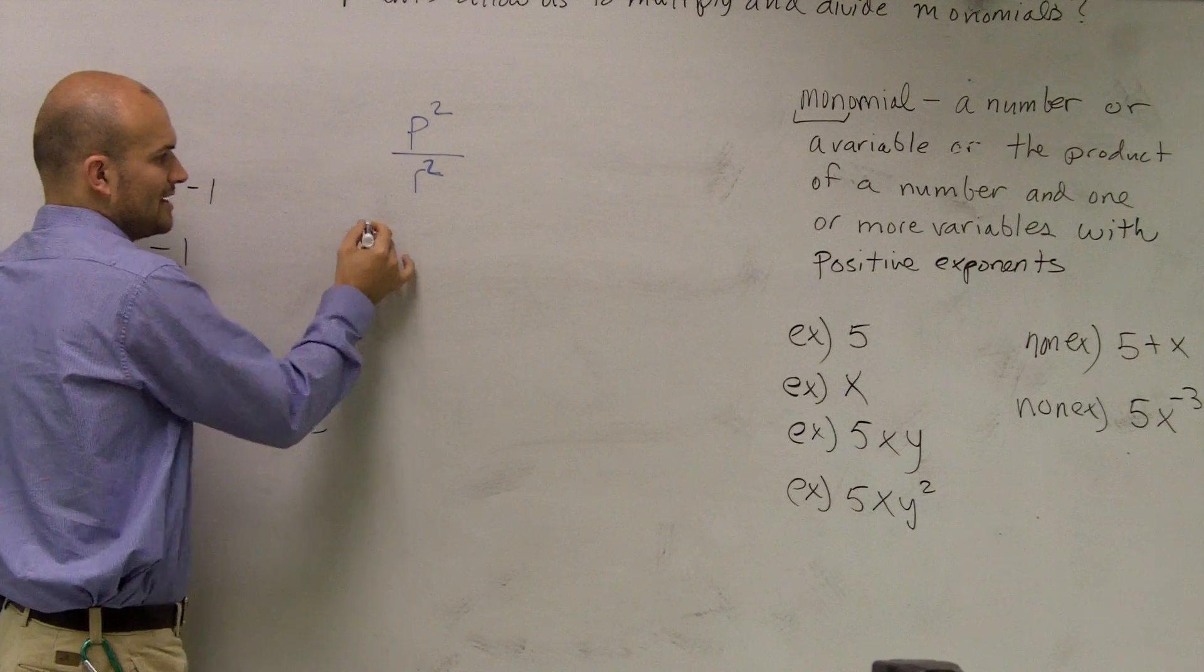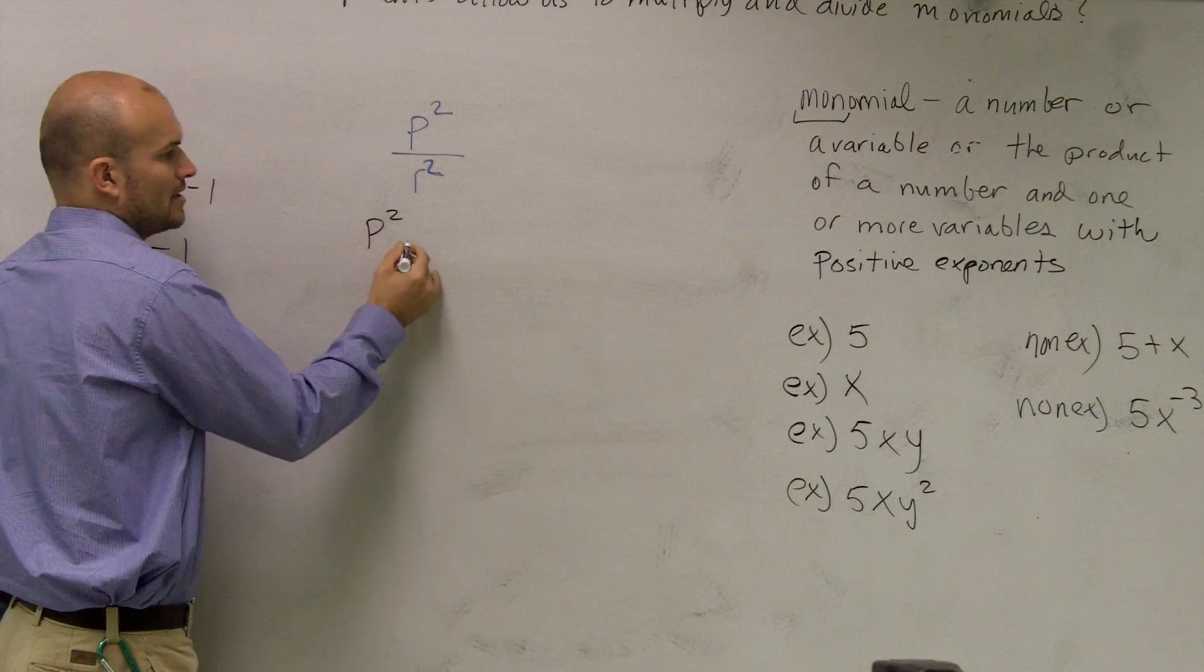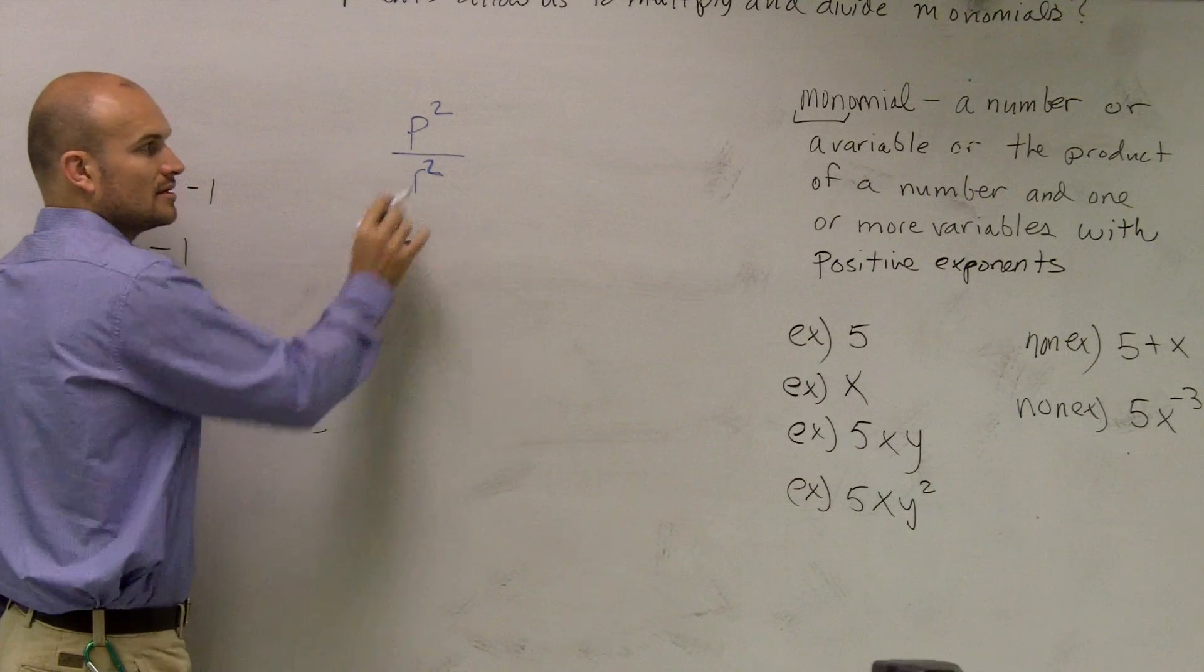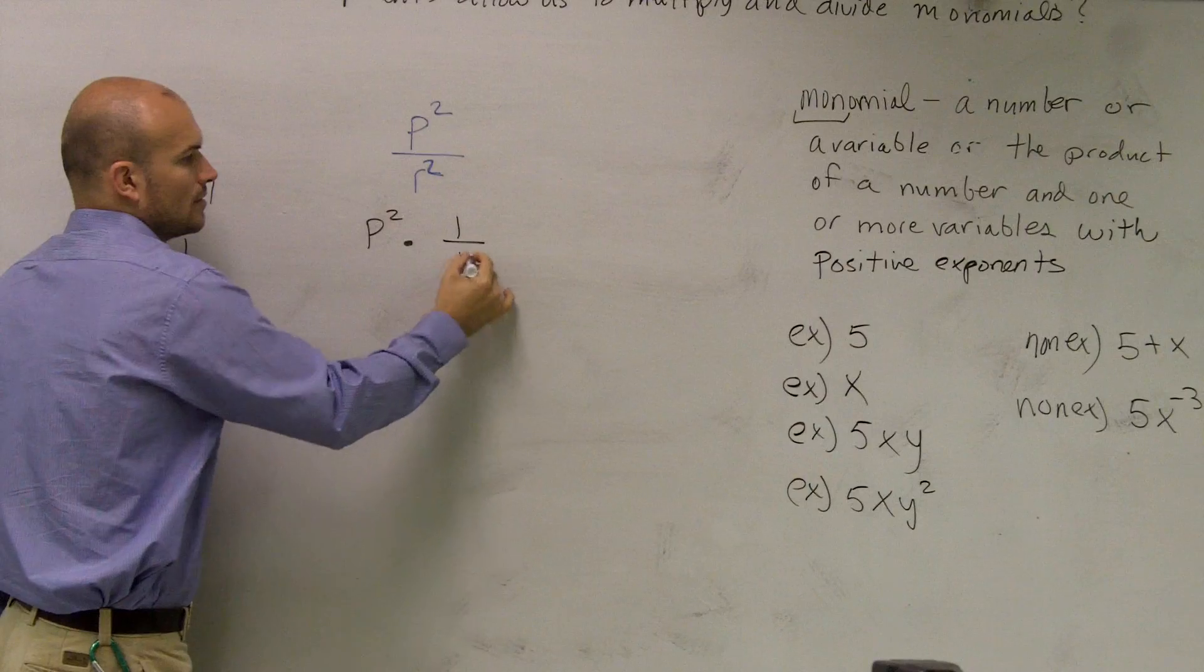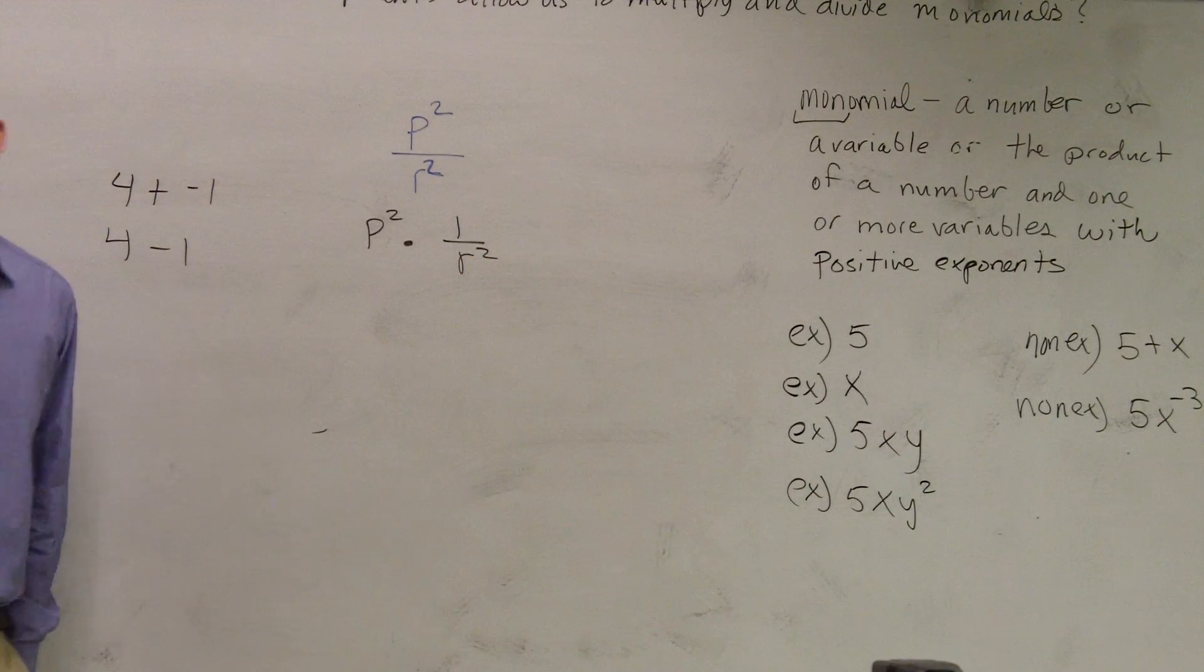What I can do is I can rewrite this and say, p squared times, well, r squared, that's as a denominator, times 1 over r squared.